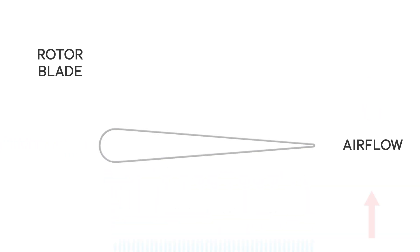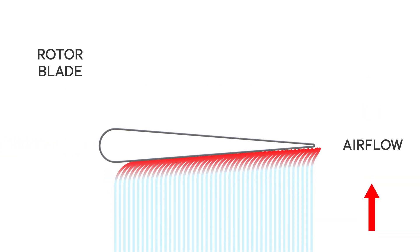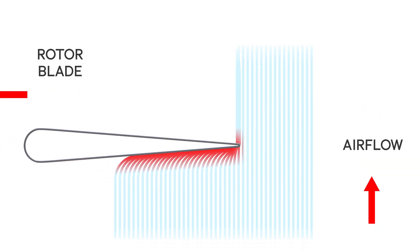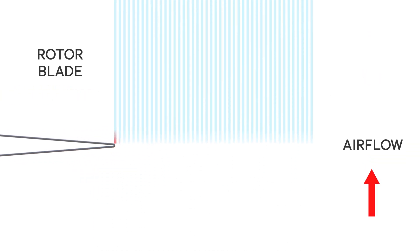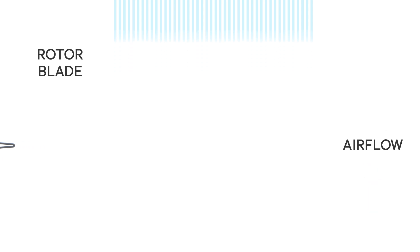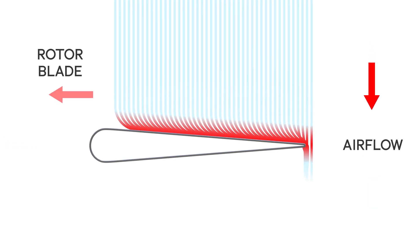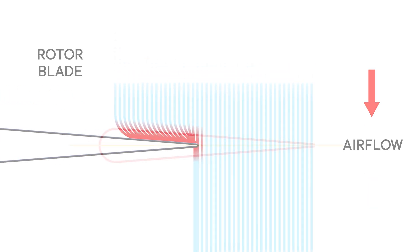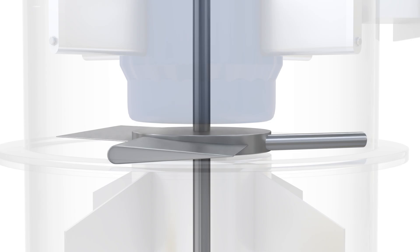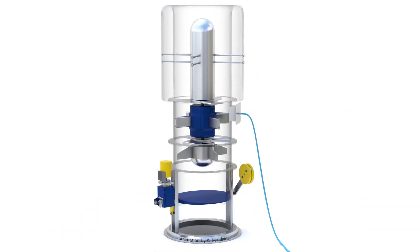Therefore, the Wells turbine always rotates in one direction, regardless of the airflow direction, guaranteeing continuous rotation of the turbine. The Wells turbine must be turned on initially — the airflow alone does not get it to rotate.